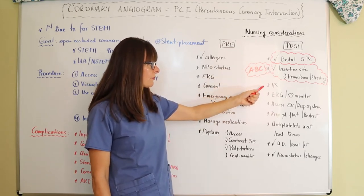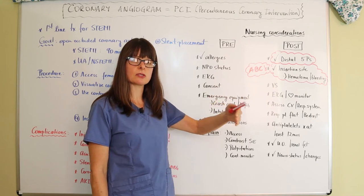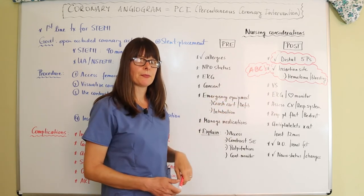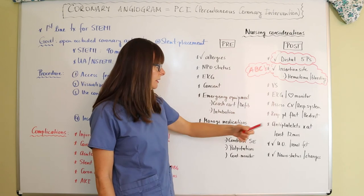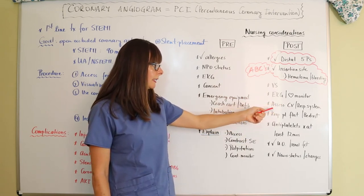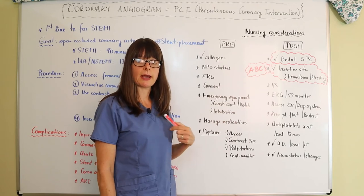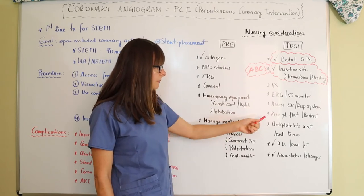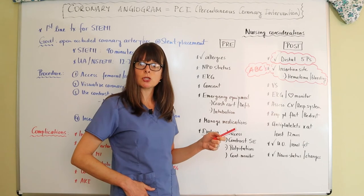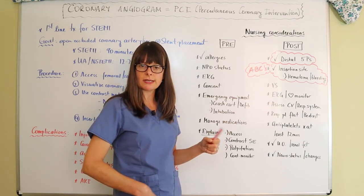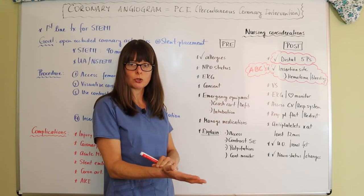Monitor the patient's vital signs frequently per protocol — more often right after the procedure, spacing out as things normalize. Do repeat EKGs and keep the patient on the cardiac monitor. Frequently assess the cardiovascular and respiratory systems, as things may change after manipulating the heart's blood supply. Keep the patient flat or on bed rest — especially with a femoral artery site, to avoid bending the leg and putting pressure on the insertion site. Radial sites are easier to manage but should still be immobilized.